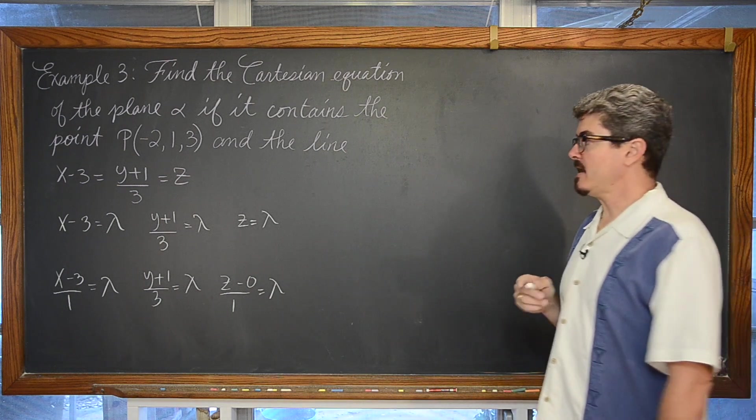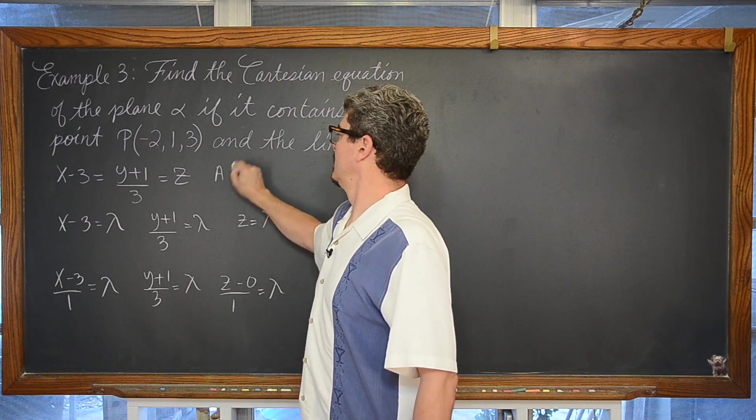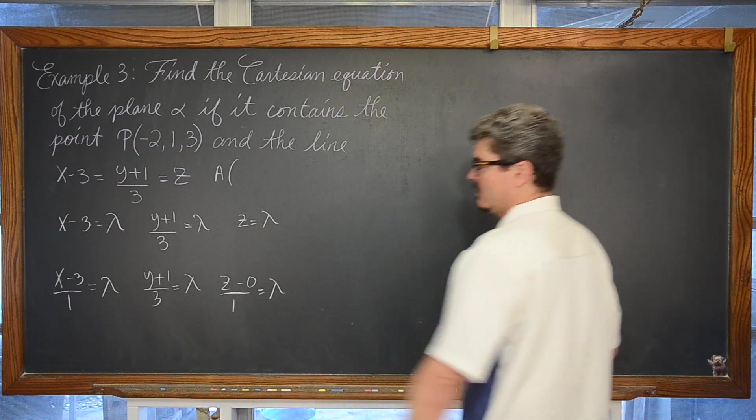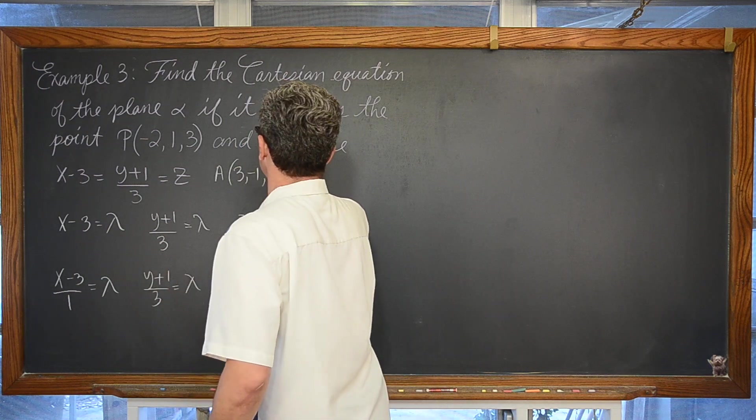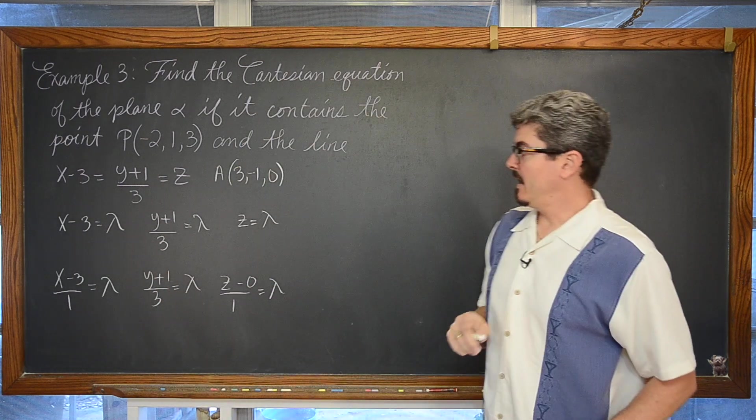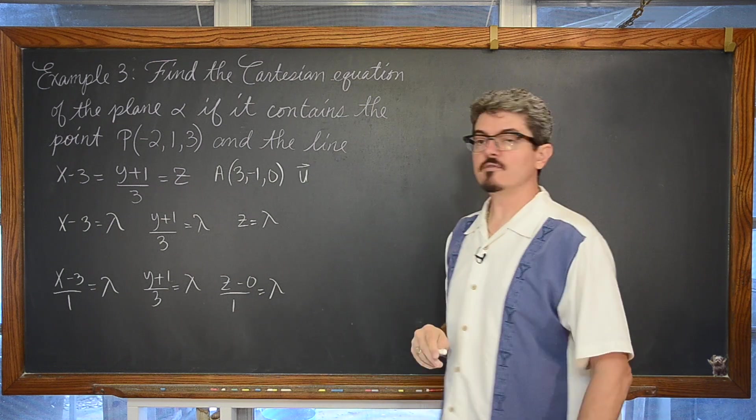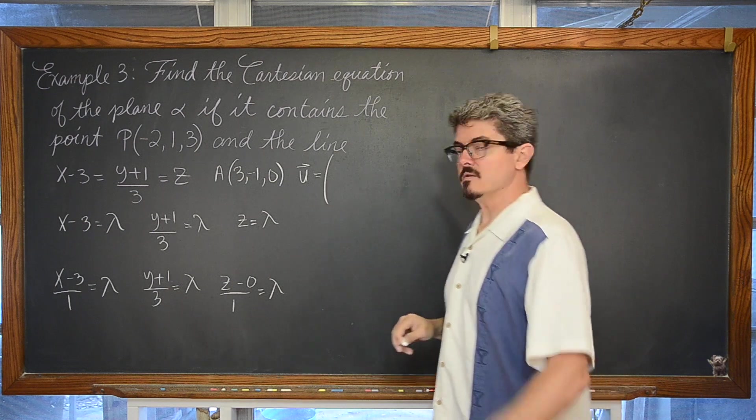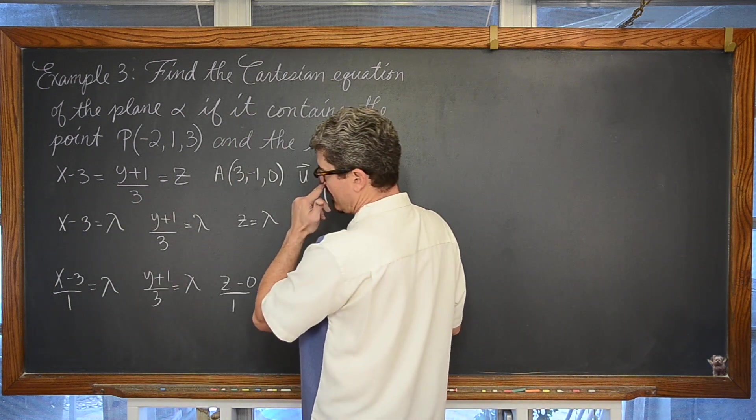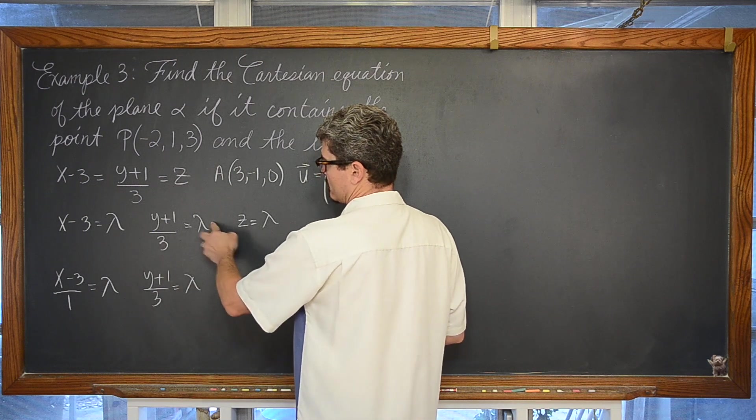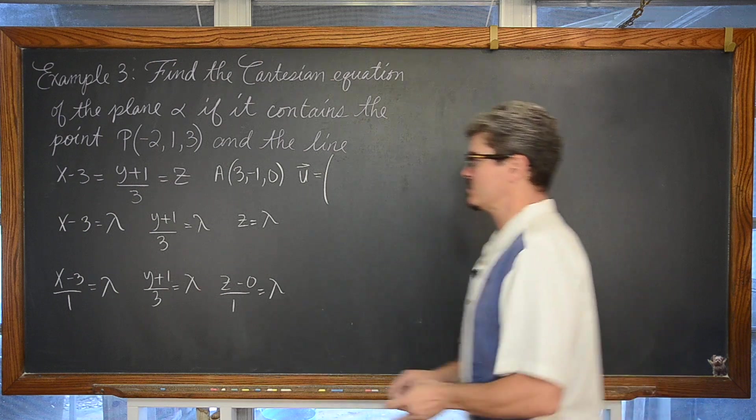So we can see that the line they gave us has a point, let's call it A, which has the coordinates 3, negative 1, 0 and a directional vector, a gradient for this line is in the denominator. Or we can see it, actually I could have multiplied this by 3 and then subtracted 1. I will show you that as well.